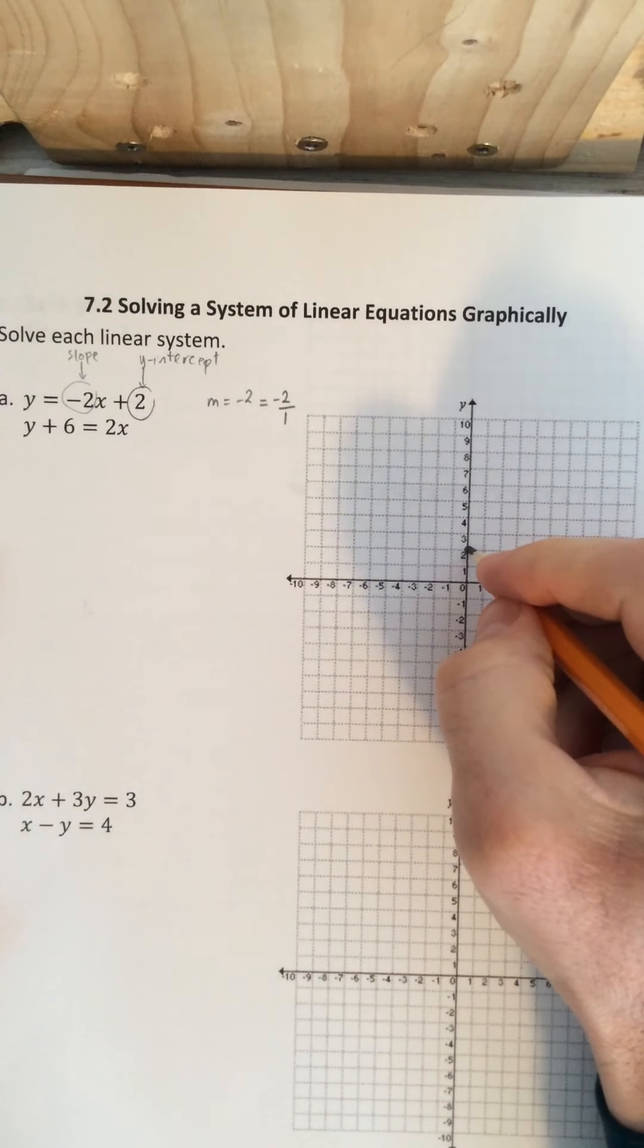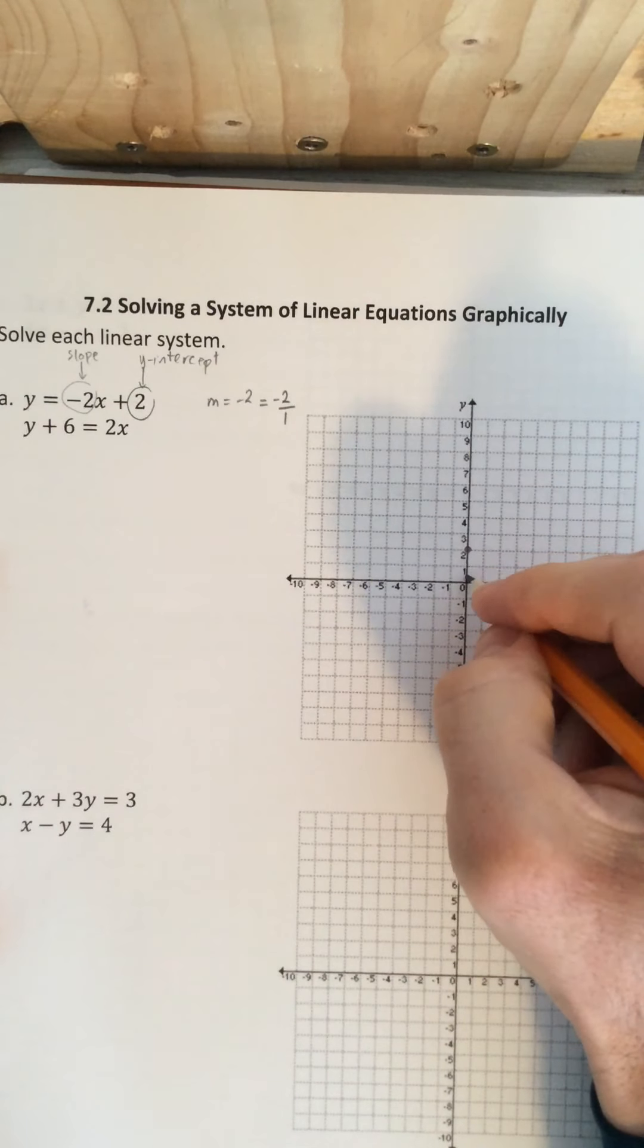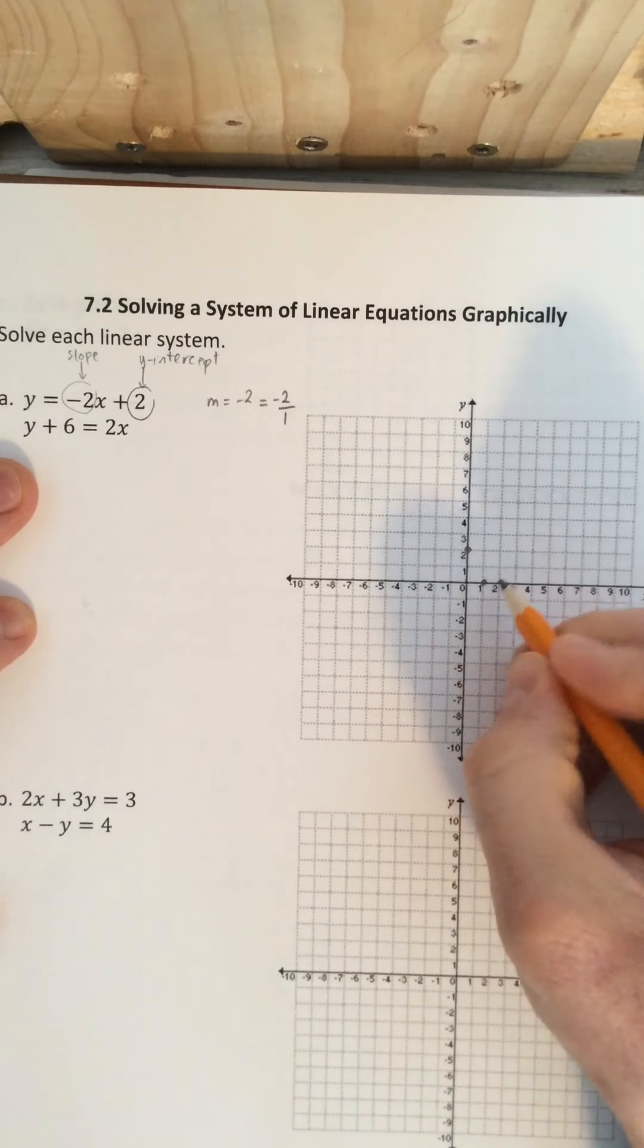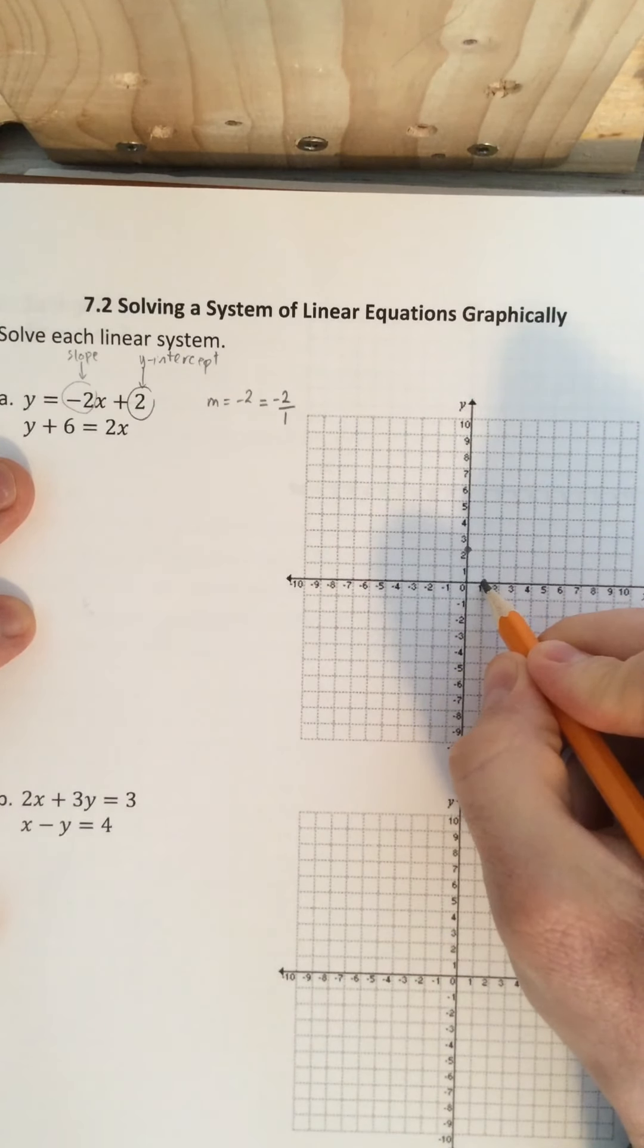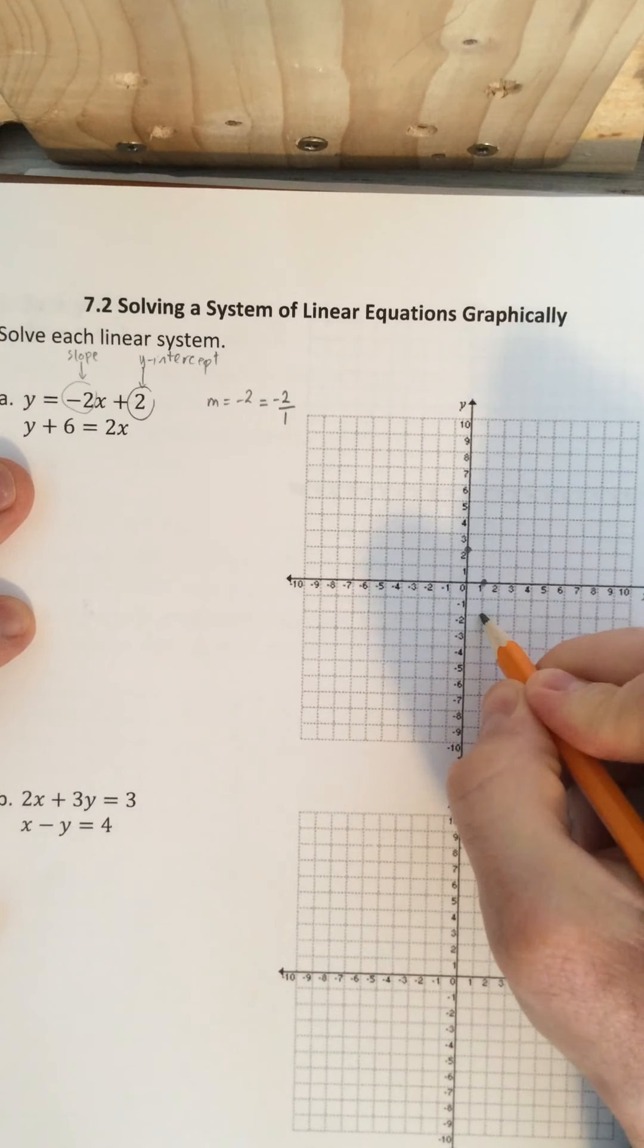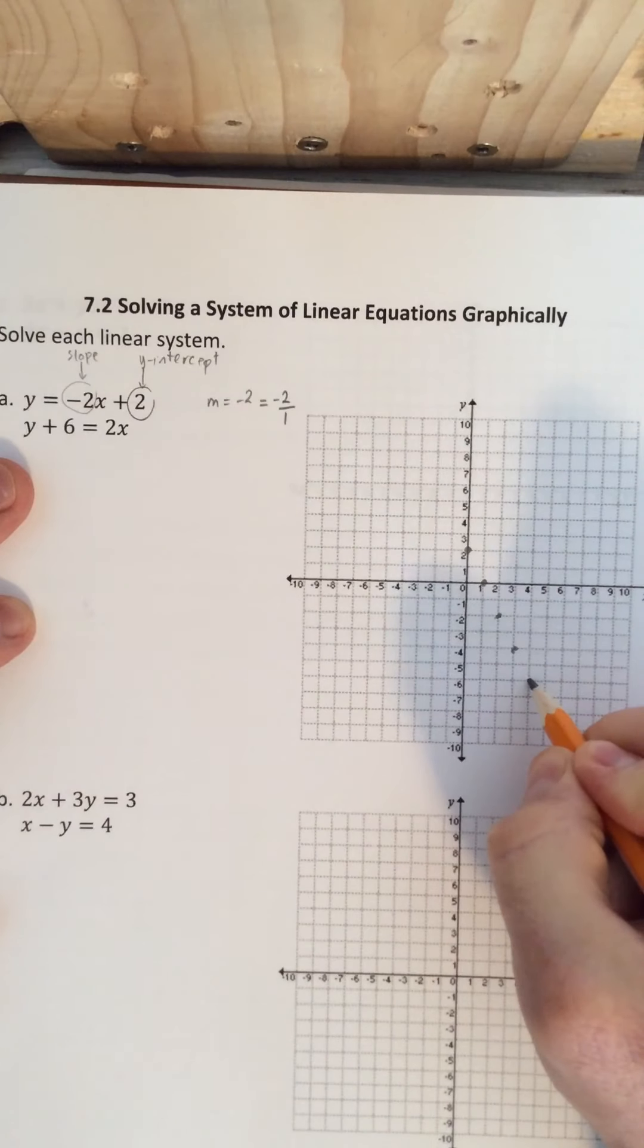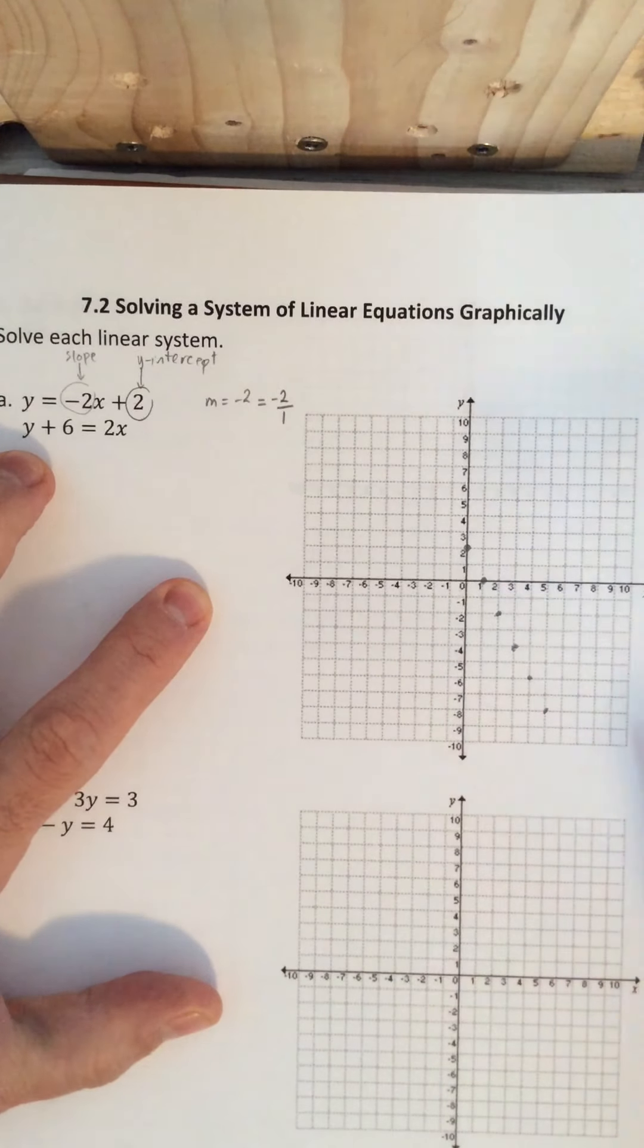So our rise from this point is negative 2, so it goes down 2 and then it will run 1 to the right. And then we can keep doing this from each point. So down 2 over 1, down 2 again over 1. And this will give us an indication of what this line is going to look like.